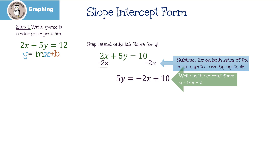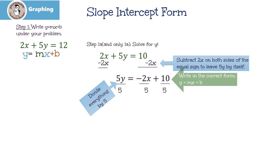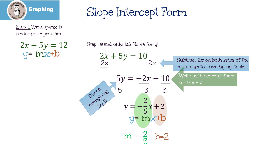One thing you're going to notice is that I put negative 2x plus 10 — here it's 10 minus 2x, but I want it in my form y equals mx plus b, so that's why I put the x term first and then the 10. We're going to divide everything by 5 to get the y by itself: 5y divided by 5 is y, negative 2x divided by 5 is negative 2-fifths x, and 10 divided by 5 is 2. When I write y equals mx plus b underneath it, we can see that our slope is negative 2-fifths and our y-intercept is 2.